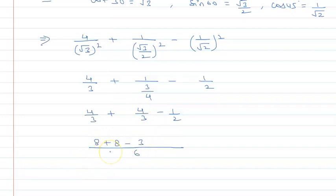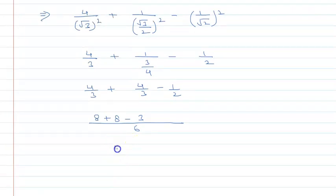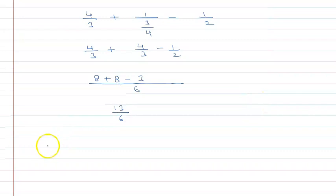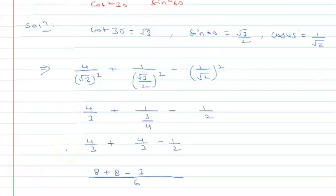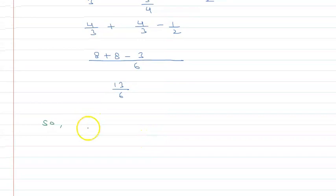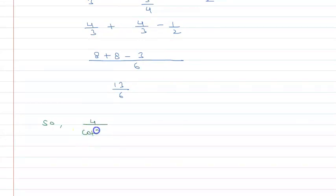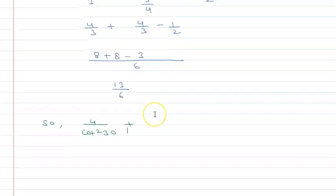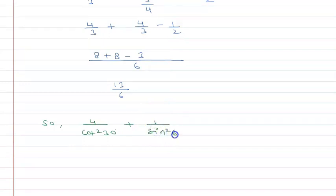8 plus 8 is 16, and 16 minus 3 is 13 upon 6. So I can say that 4 upon cot square 30 plus 1 upon sin square 60 minus cos square 45 is equal to 13 upon 6.